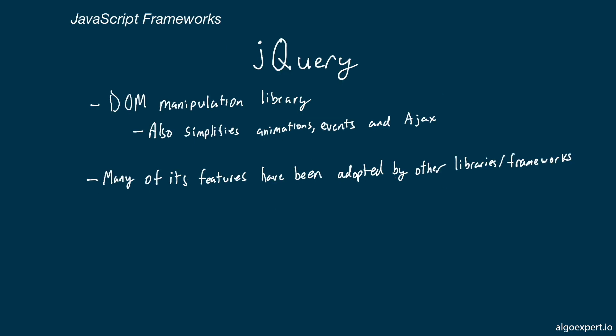Next, let's look at jQuery. jQuery is a DOM manipulation library that also has functions for simplifying animations, event listeners, and Ajax — so you can use it instead of calling fetch. Historically, jQuery has been the largest library on the web, because it made JavaScript much easier to work with. Over time, many of its features have been adopted by other libraries, frameworks, or JavaScript itself. jQuery has been getting less popular, but there's still a huge portion of the web using it, and many people feel there isn't much need for it on new projects anymore.